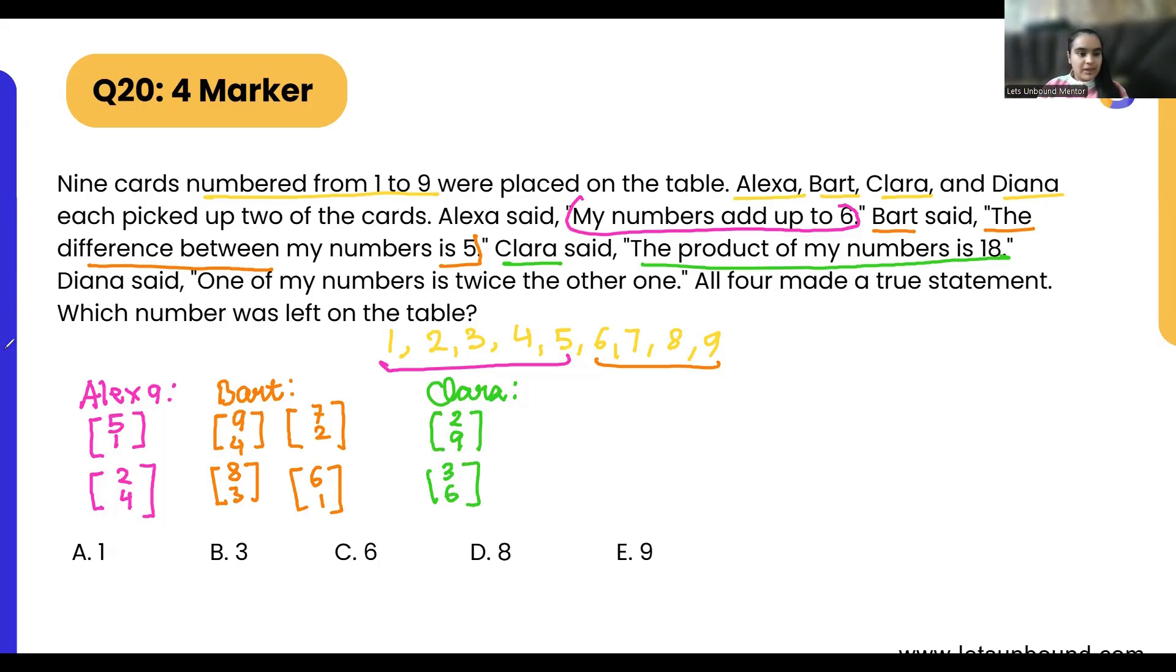Now next is Diana. Diana said one of my numbers is twice the other one. So Diana, twice the other one, that means one times two is two, so one and two. Two times two is four, so two and four. Three times two is six, so three and six. And four times two is eight, four and eight. Five times two will be ten but ten is not there. So Diana can have these possible sets of numbers.